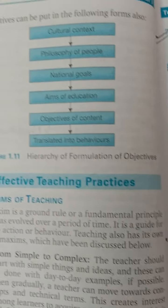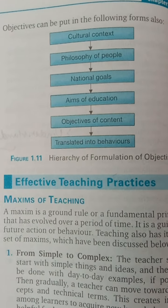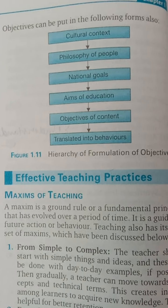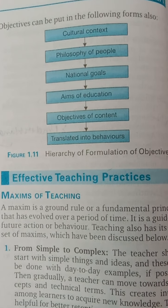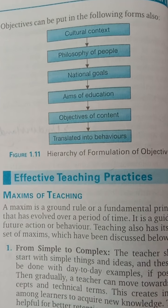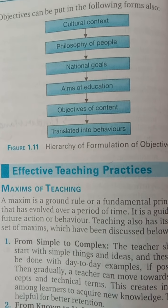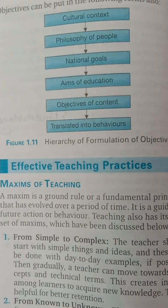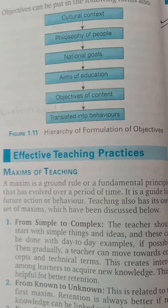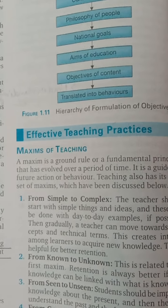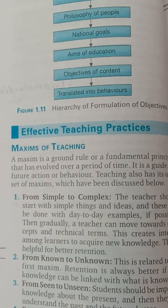Objectives can be put in the following forms: cultural context, philosophy of people, national goals, aims of education, objectives of content, and translated into behaviors. This is the hierarchy of the formulation of objectives.